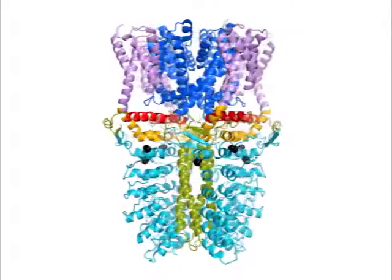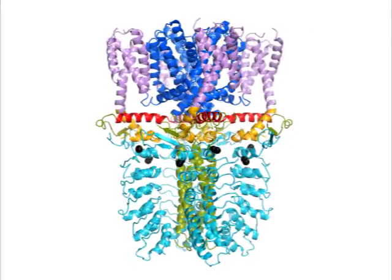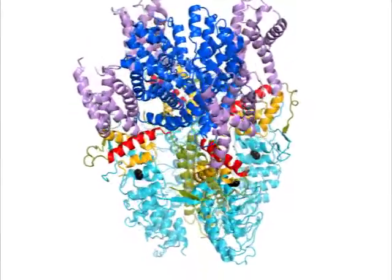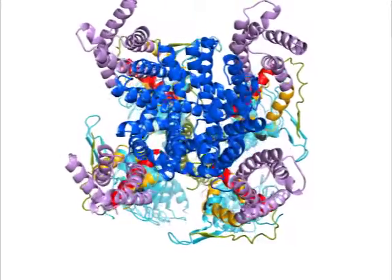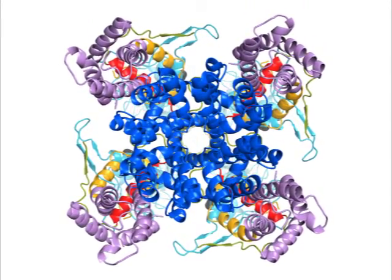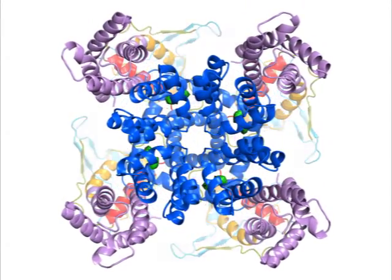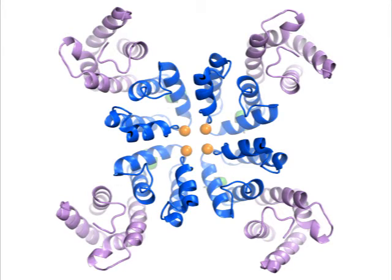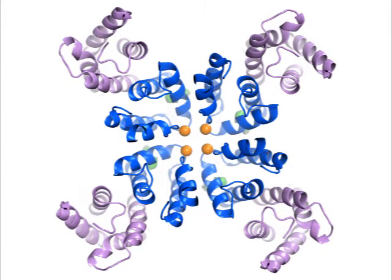Let's explore the fully assembled TRPA1 tetramer by traveling down the center of the channel. Along the way, we'll encounter additional features revealed by this fascinating new cryo-EM structure. Our journey starts at the extracellular face, where two pore helices from each subunit, highlighted in orange, line the channel entrance. The channel has two gates, and these spheres mark the upper gate at the end of pore helix 1.